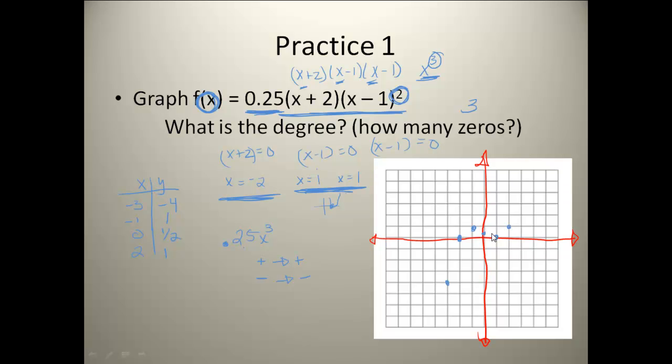I want to see if that matches. So as I go over here to positive infinity, is my graph going up? And it looks like it's going to. And as I go to the left, is my graph going down towards negative infinity? And it looks like it's going to.